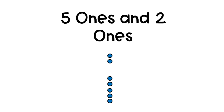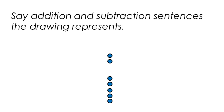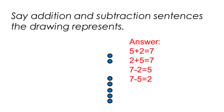Here are five ones and two ones. Say the addition and subtraction sentences the drawing represents. If we add five ones and two more ones, we get seven. So we can say five plus two equals seven.